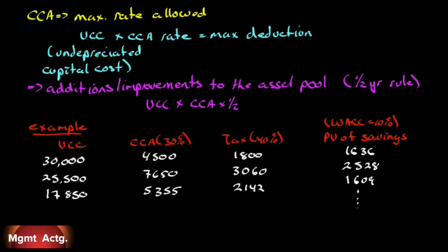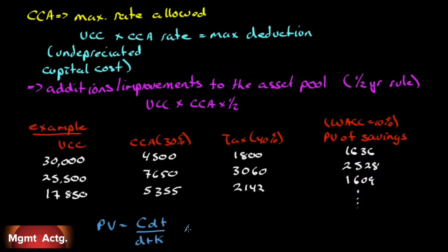That's going to be rather complicated to keep adding up — imagine doing another year and another year and so on. It's going to take a long time to figure out the net present value of all of that. But here's the thing: we have a geometric series. And if you remember from high school algebra, we can express the result of a geometric series with one equation. Rather than calculating them all out, we can find them directly with a formula: the present value is CDT over D plus K times 1 plus 0.5K over 1 plus K.